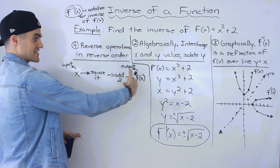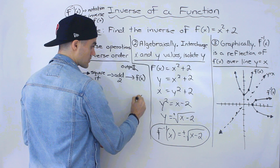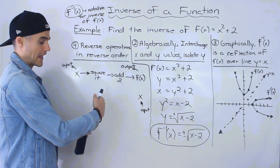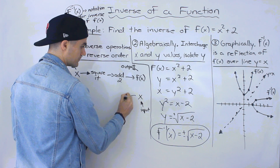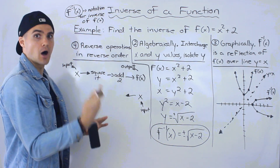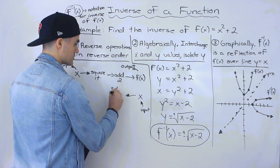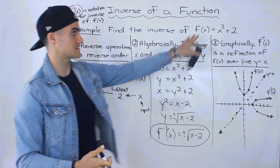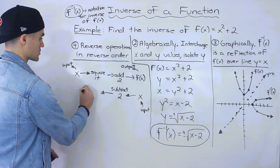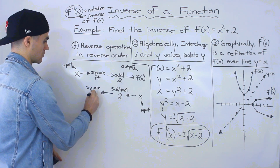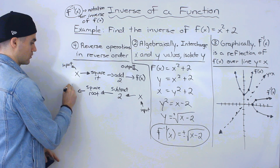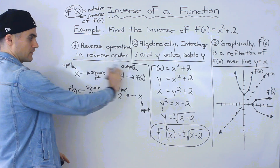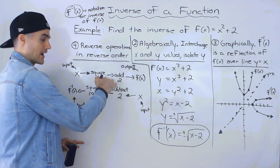If we want to figure out the inverse, we reverse the operations in reverse order. So we start with x as our input. Instead of adding two, the reverse is subtracting two — so we subtract two. Then instead of squaring it, the reverse is square rooting it — so we square root. Then we end up with our inverse as the output.